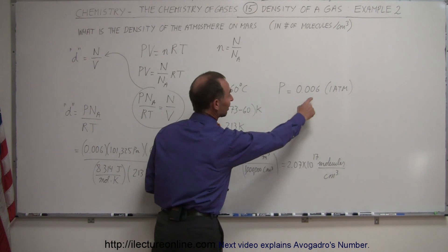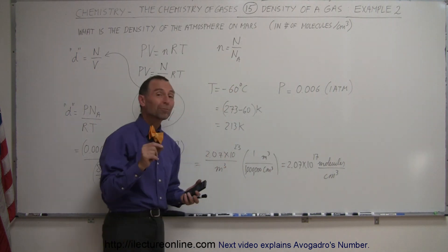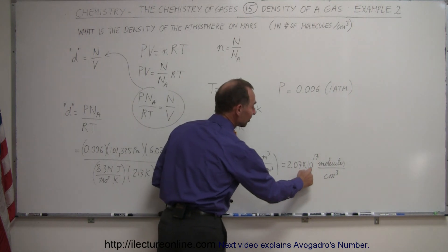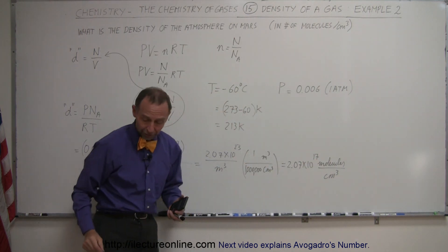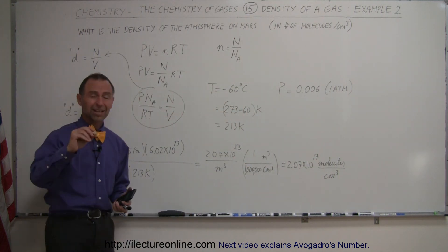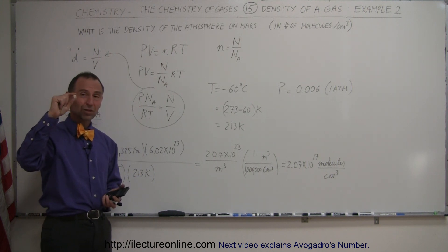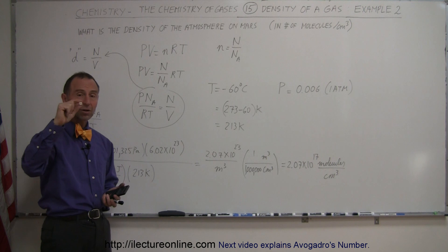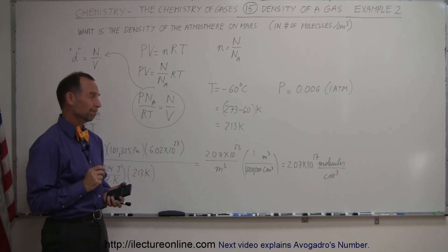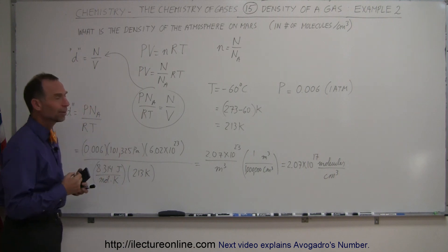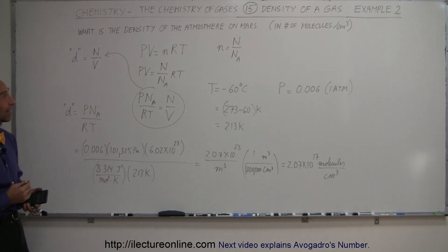Yet, with almost no atmosphere, atmosphere being less than 1% atmospheric pressure of Earth, there's still 2 times 10 to the 17th molecules for every cubic centimeter. And a cubic centimeter is only about this big. So there's still that many molecules in the atmosphere around Mars for every cubic centimeter. Wow, that's amazing. But another good example of how to find the density of a gas.